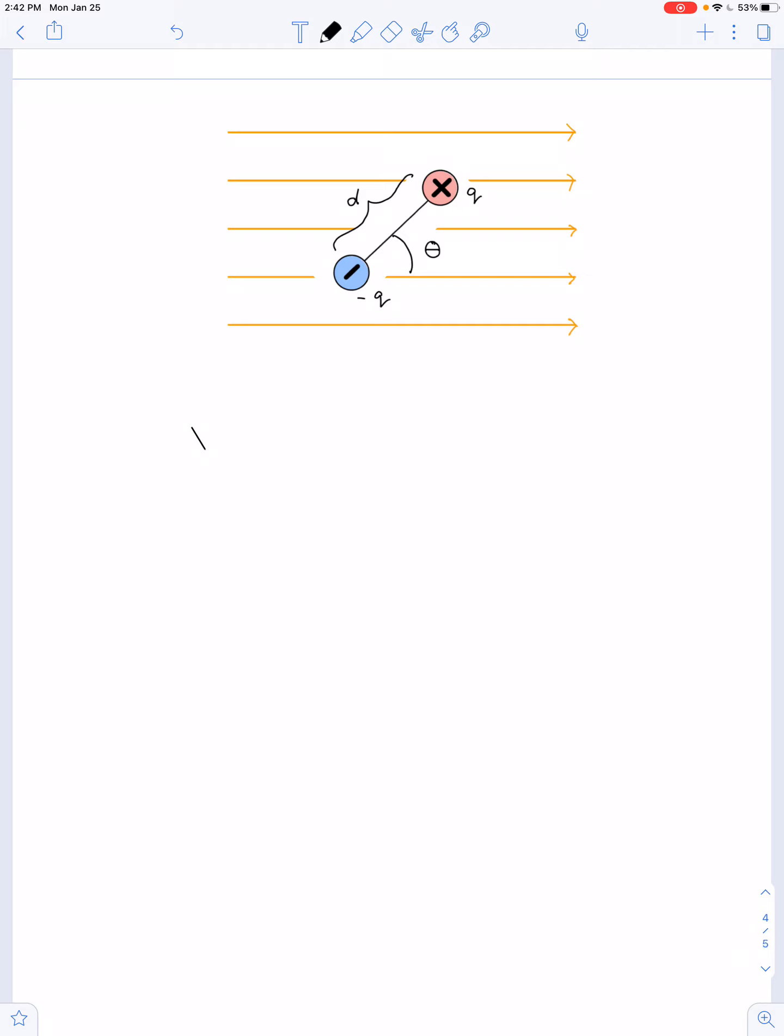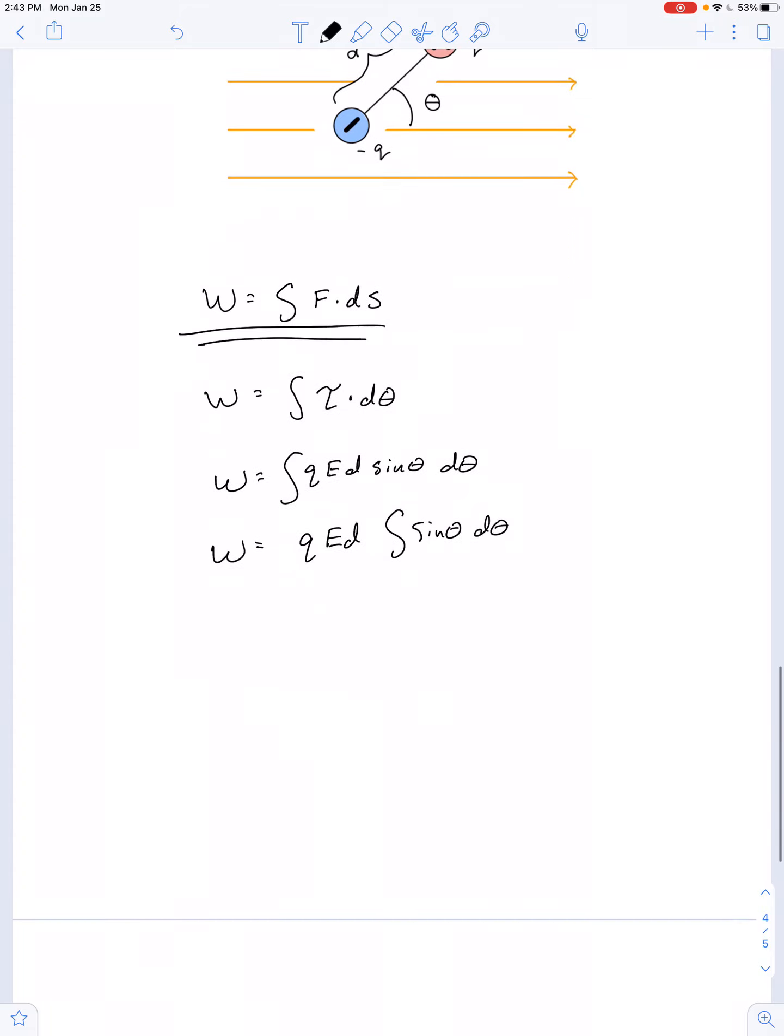And let's figure out how much work would be done as it rotates from this position back into its position of lowest potential energy. So recall now that work is the integral of F dot ds. If you know the analogy between linear equations and rotational equations, you might be able to recall that work then could also be calculated as the integral of torque dot d theta. So we can say work is equal to QED sine theta d theta or work is equal to QED integral of sine theta d theta. So work is equal to QED cosine theta.